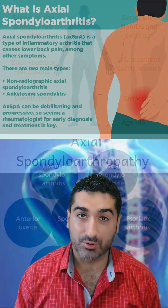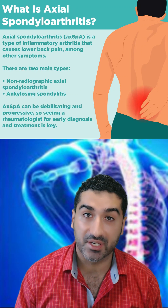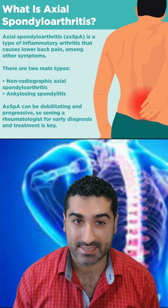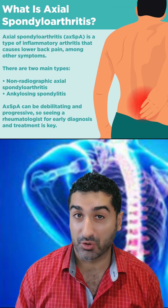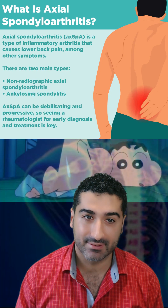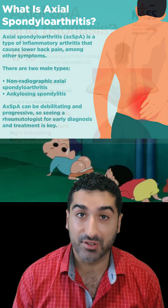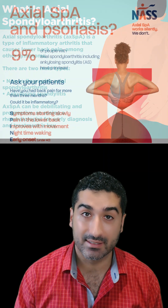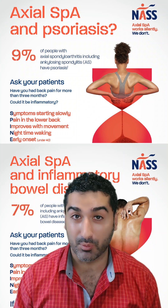Axial spondylarthropathy often presents as lower back pain or stiffness, which is worse in the morning or sometimes late at night. Sometimes it gets better with exercise; it does not improve or gets worse with rest, and especially pain around the buttocks. There are other linked conditions as well, such as psoriasis or inflammatory bowel disease.